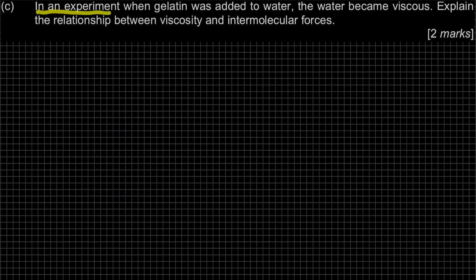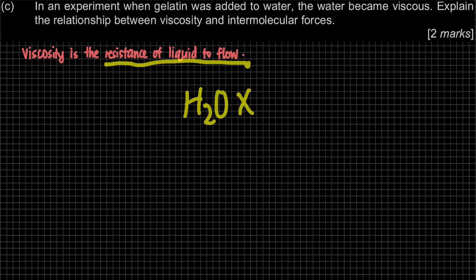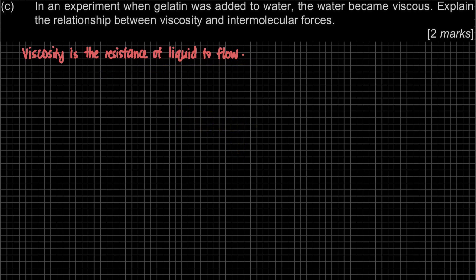Question C: in an experiment, when gelatin was added to water, the water became viscous. Explain the relationship between viscosity and intermolecular force. First, we define viscosity: it is the resistance of a liquid to flow. In everyday life, water has low viscosity because it flows easily - just open the tap. Honey, on the other hand, is viscous because it does not flow easily - it has high resistance to flow.